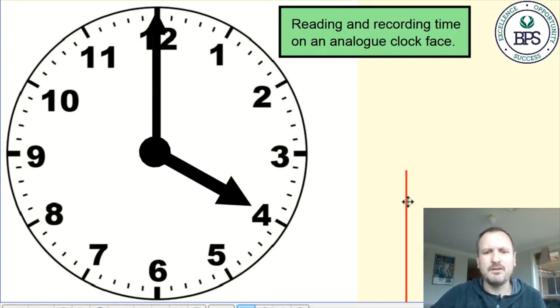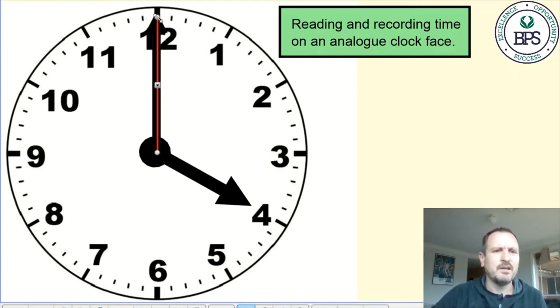Now the third hand you'll sometimes see is the second hand. Often it's skinnier and red, and this is the hand that is moving constantly. This one will tick around the clock once every minute. Every time it moves across one of those little markings, that is one second past, which means that a whole minute is 60 seconds all the way around. I'm not going to talk about that one too much today, so I'm just going to delete that from the screen.